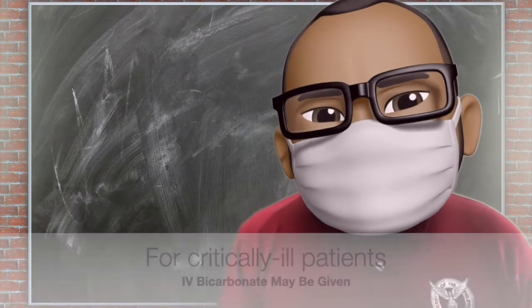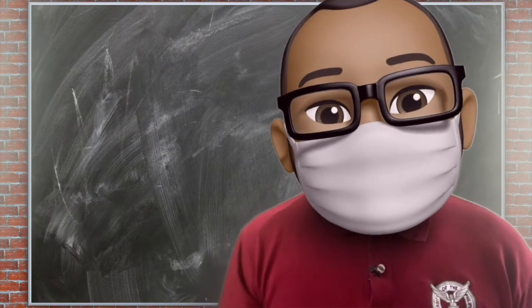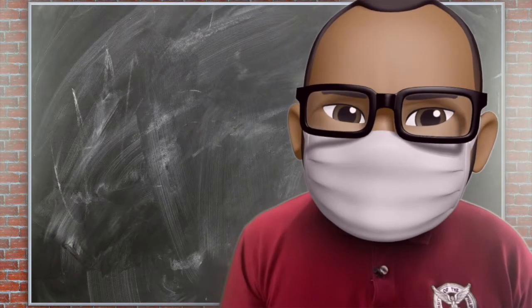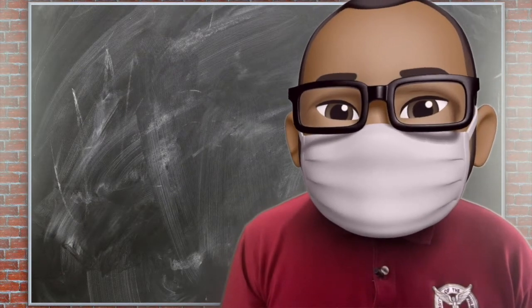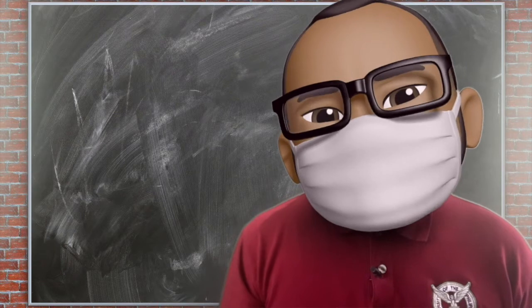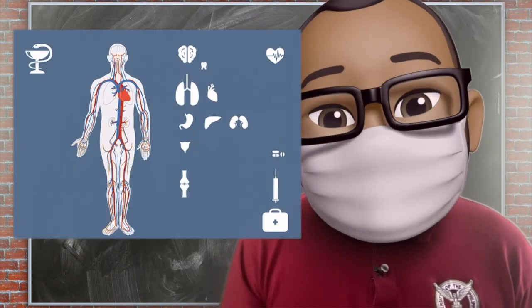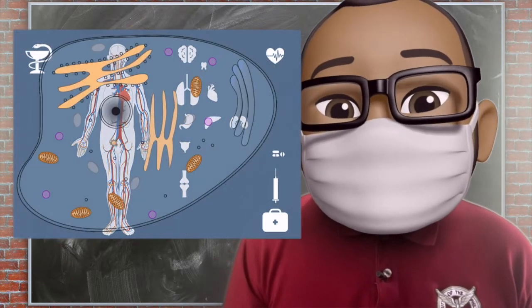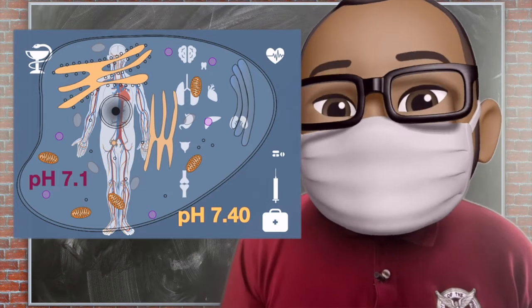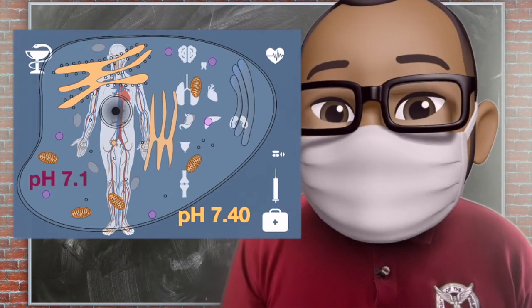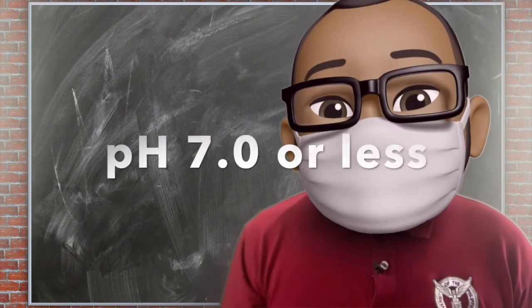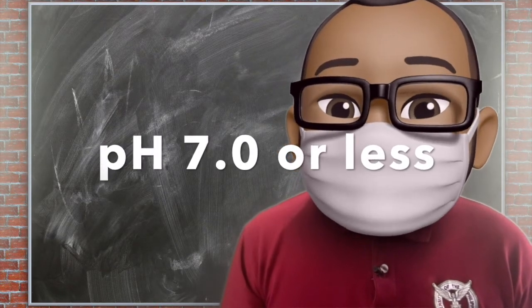If there is a need to give bicarbonate, when can we give it? Do we give it as a full correction or half correction? Although most authorities in acid-base physiology will give bicarbonate at an arterial pH of less than 7.1, it is not a hard and fast rule. Remember, extracellular pH is 7.4, while intracellularly it is 7.1. We all know that acidemia is protective for the brain, but unfortunately troublesome for the heart. So for me, a pH of 7.0 or less needs correction.